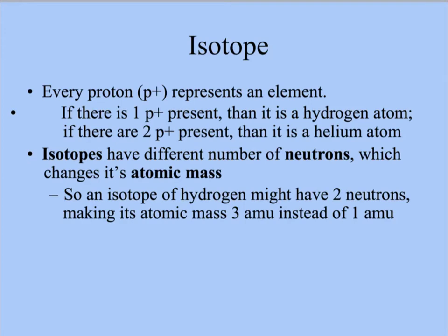An isotope has a different number of neutrons, therefore it will have a different atomic mass. It will have the same number of protons because if we change the protons, it will change the atom. Atomic mass is the amount of protons plus neutrons. Since they both have a mass of one, you add them together to get the atomic mass.